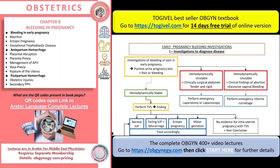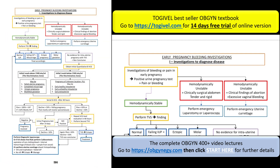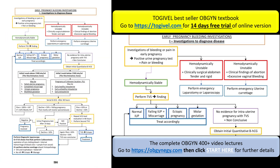In this tutorial we will discuss the investigations to diagnose bleeding in early pregnancy. First of all, you have to decide: is the patient hemodynamically stable or not? If she is unstable and there is a surgical abdomen which is tender and rigid, then you have to perform an emergency laparoscopy or laparotomy.